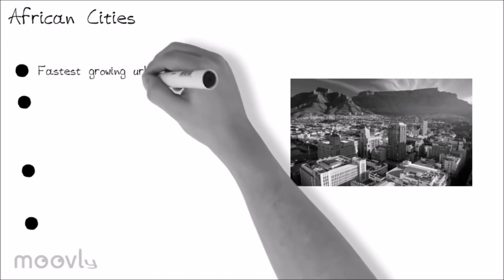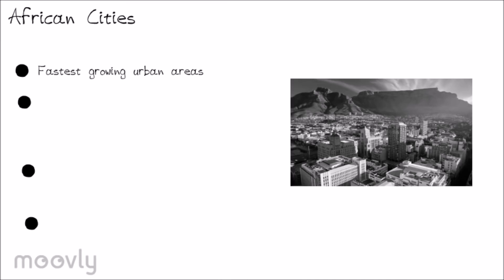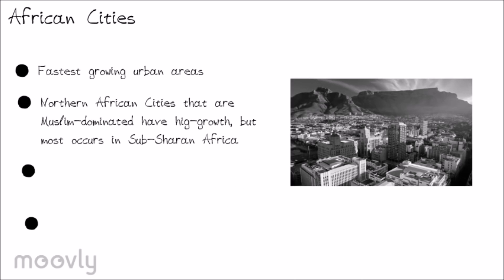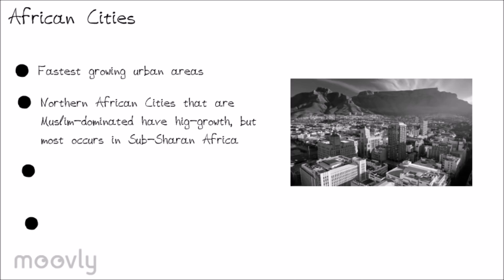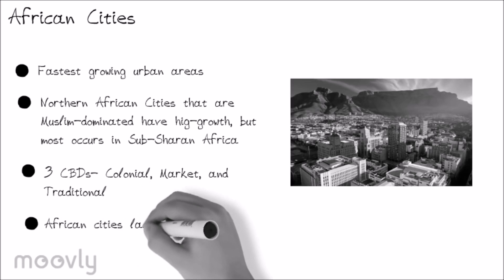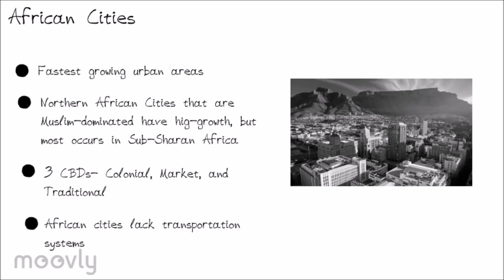African cities are the fastest-growing urban areas in the world today, with most people coming from the countryside to look for work. Cities in Northern Africa that are Muslim-dominated have a high growth rate, but most growth occurs in Sub-Saharan Africa. African cities have three distinct CBDs: the colonial CBD where government headquarters are found, a market or bazaar as the consumer section, and the traditional CBD holding financial institutions and the commercial center. Ethnic neighborhoods extend outwards from them, followed by mining and manufacturing zones and squatter settlements. African cities lack adequate transportation systems due to insufficient infrastructure and funding, and are also affected by high HIV rates and large numbers of orphaned and homeless children.